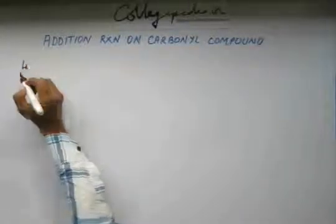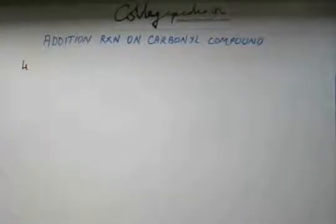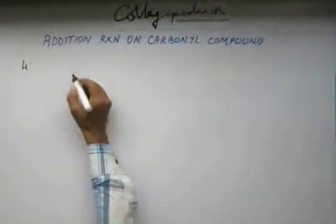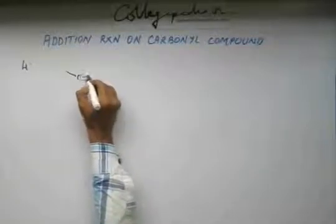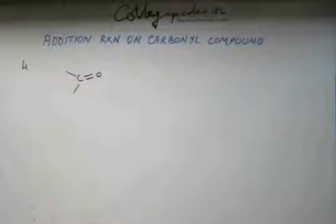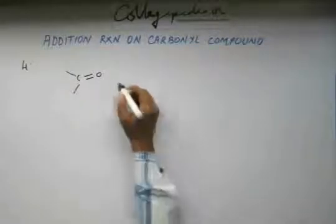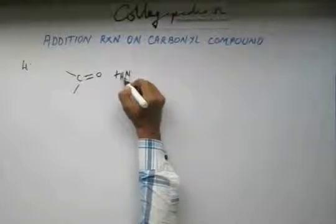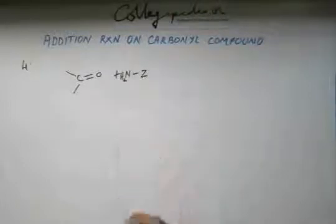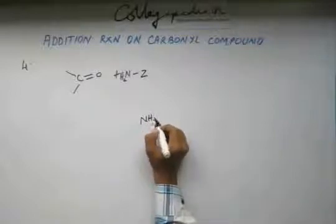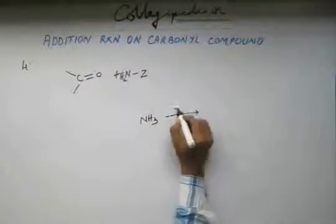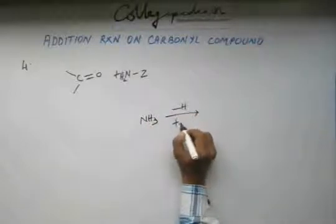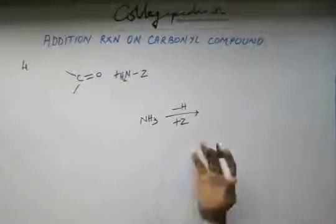Okay so we move on to the fourth reaction and this reaction would be addition elimination reaction. If we take a carbonyl compound, it can be aldehyde or ketone, and if we take an ammonia derivative. Look this is ammonia NH3. If you remove one hydrogen and if you add a group, this Z can be any group. This can be a hydrogen as well.